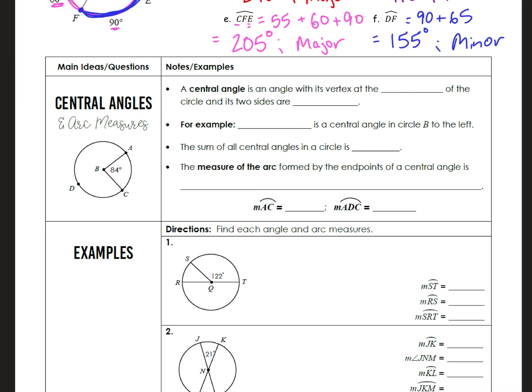As we get started, we're going to review some vocabulary. We talked about a central angle yesterday - it's an angle with its vertex at the center of the circle, and its two sides are radii. In this example, the central angle is ABC, where point B is the center of the circle and the sides are the two radii.